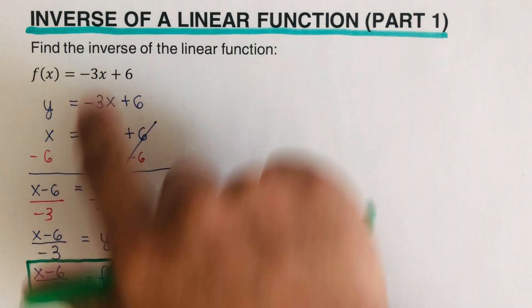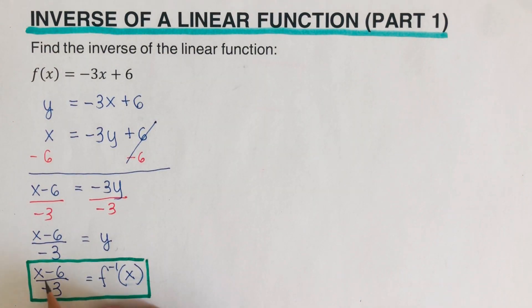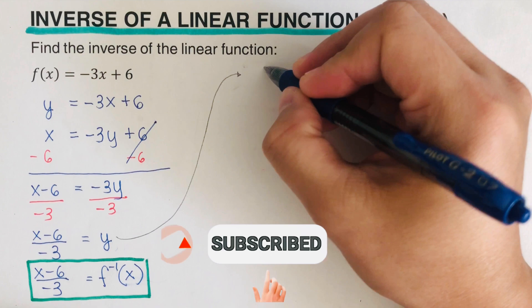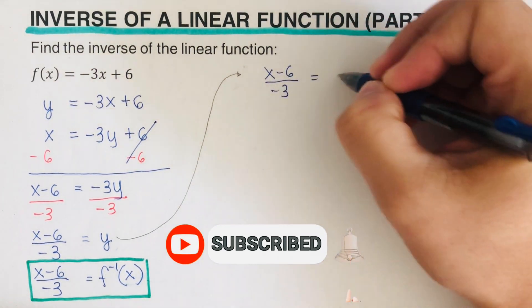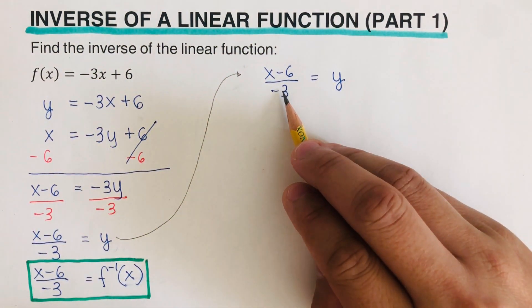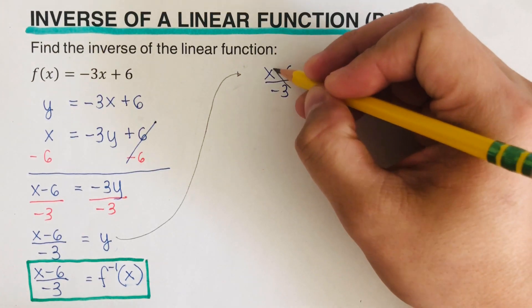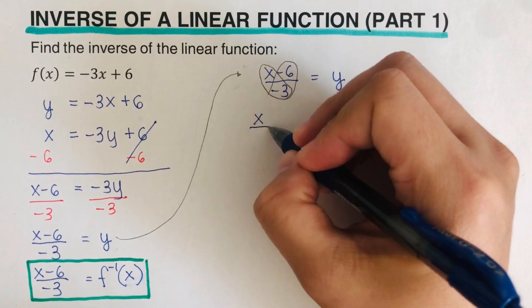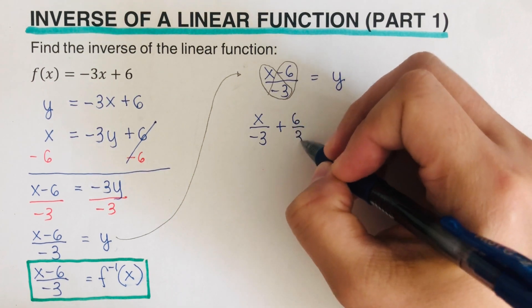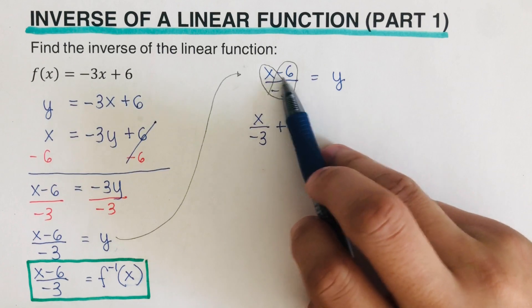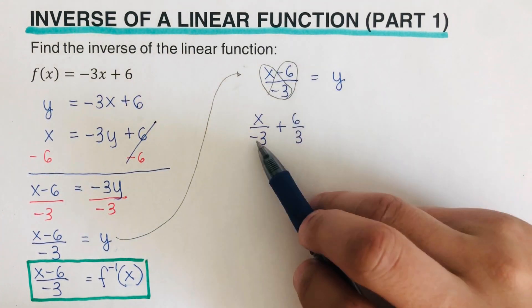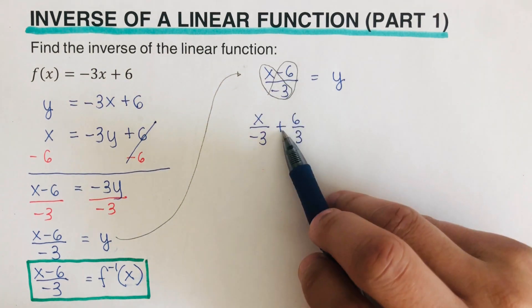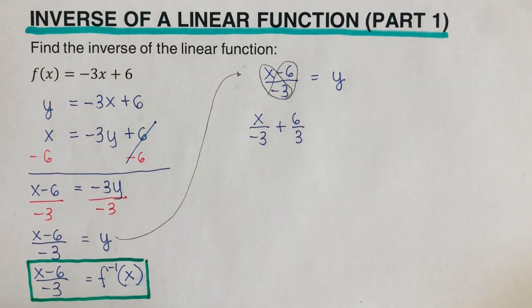There are other ways of expressing the inverse. Starting from (x - 6) / -3 = y, we remember that -3 is the denominator shared by both terms on top. So we can rewrite it as x / -3 plus 6 / 3 — the two negatives make a positive, giving us +6/3.